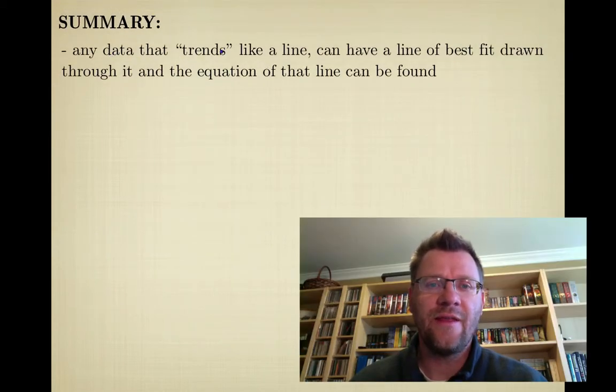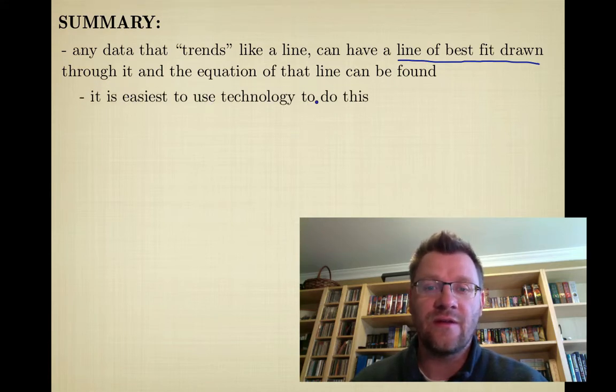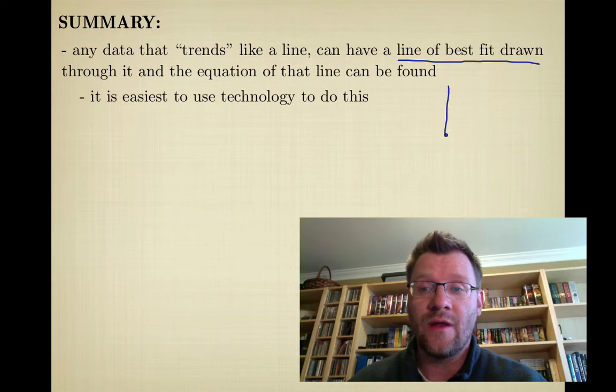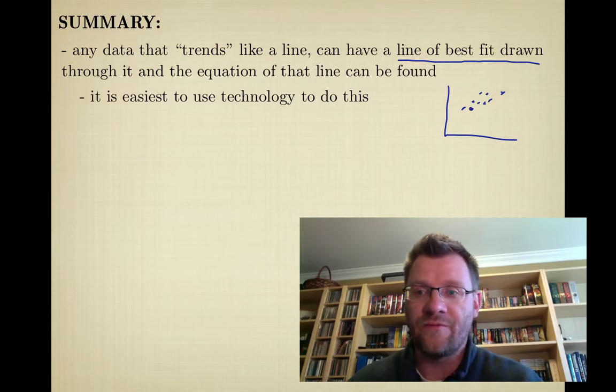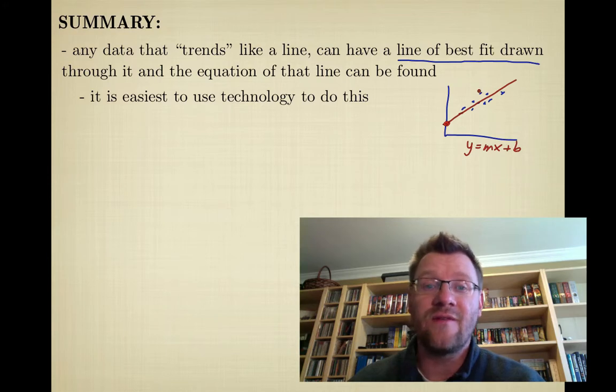So in summary, any data that trends like a line can have a line of best fit drawn through it and the equation of that line can be found. It's easiest to use technology to do this, although if you had a lot of data points you could draw that line yourself. You could find the slope of that line just by counting squares or however you want to do it, and then you could also find the y-intercept so you could write that as y = mx + b if you wanted to do that by hand. But when you have a lot of data, it's easiest to use technology—just type it in and tell the spreadsheet what to do.